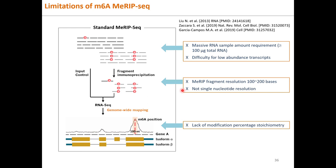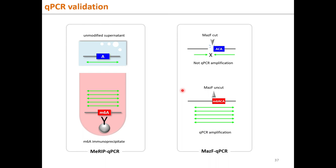With high-throughput M6A microarray data, it is common to confirm differentially methylated RNA by qPCR-based methods. In MeRIP qPCR, M6A modified RNAs are immunoprecipitated by anti-M6A antibody and quantified by qPCR. In MAZF qPCR, the M6A site is cleaved by MAZF enzyme and quantified by qPCR.